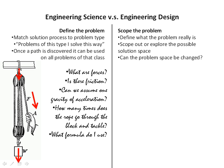Some of the questions we might ask in engineering science, either explicitly in our homework or in our head, may look something like this: What are the forces? — these are things we can calculate. Is there friction, because friction may be another force we need to account for? Can we assume one gravity of acceleration? How many times does a rope go through the block and tackle, because with longer lengths of rope the force the hand needs to pull is completely different? And of course, what formula do I use? — because when you're given these types of problems and want to solve them efficiently, you want to plug the numbers into the formula and get the answer as quickly as possible.